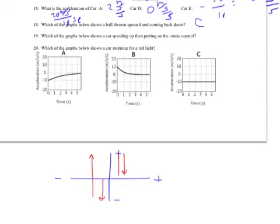Which graph shows a car speeding up and then putting on cruise control? At first the car is going faster and faster, getting closer to the same speed, and then it stays on it — it stops accelerating, meaning it's going the same speed. That would be car B.